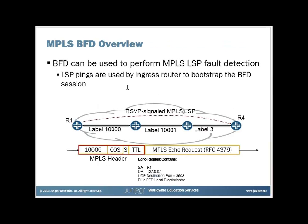Here we talk specifically about BFD for RSVP-signaled LSPs. It is used to perform LSP fault detection — to detect when an LSP has gone down. Here we have an LSP built from the ingress router R1 all the way over to R4. We see the labels that are assigned to each link for this particular LSP.